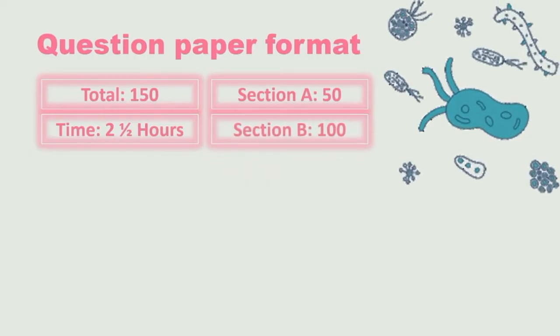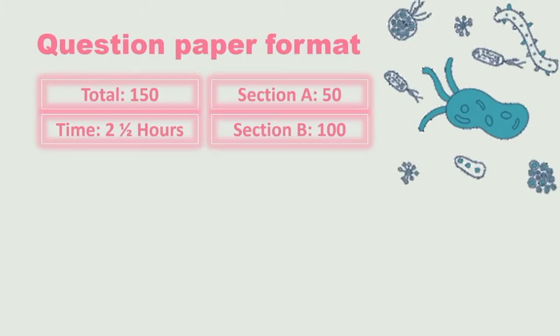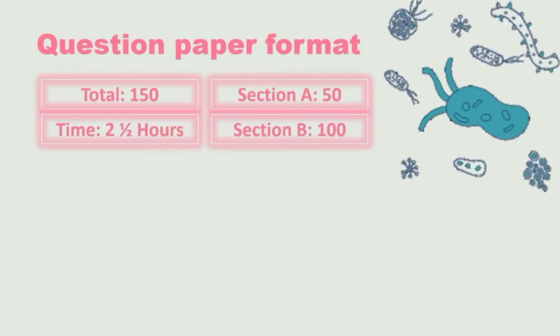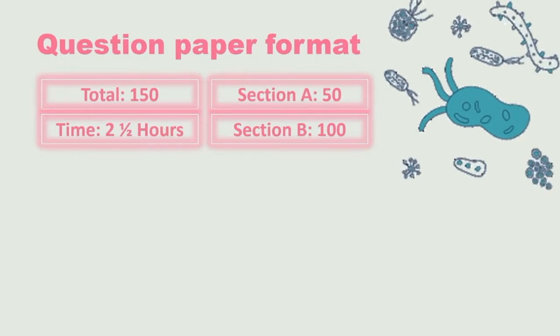Section A which is 50 marks will include your definitions, your multiple choice and then shorter contextual questions. Section B will be the rest of the contextual questions which is a total of 100 marks.